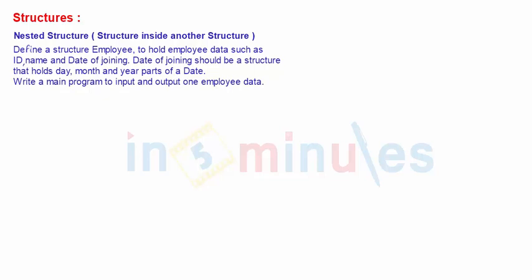So 'date' will be a structure and it is going to be a member of the main employee structure. We will write a complete program to input and output one employee's data. The main employee structure will have ID, name, and date of joining, where date of joining itself is a structure holding day, month, and year. Input and output is done by printf and scanf with the normal ampersand, %d, %s, etc. The main part is how to define these structures.